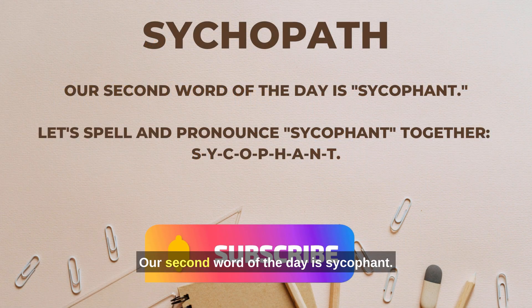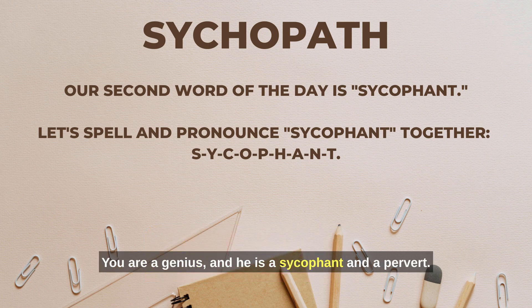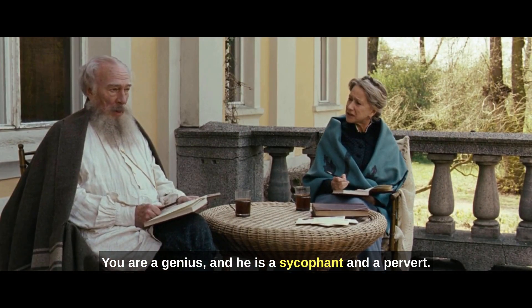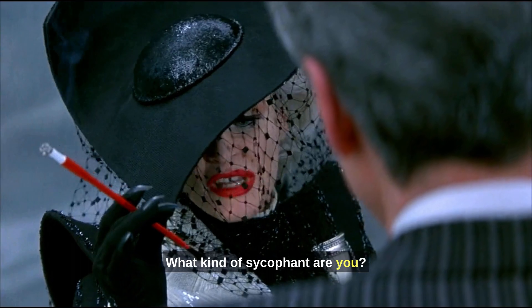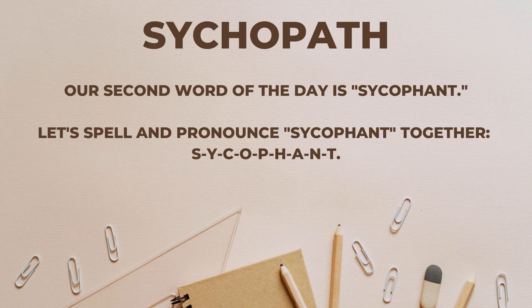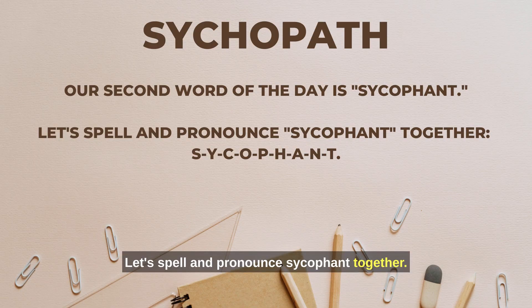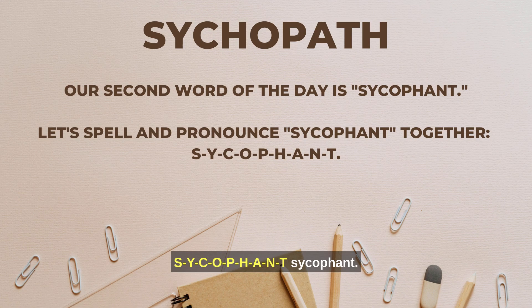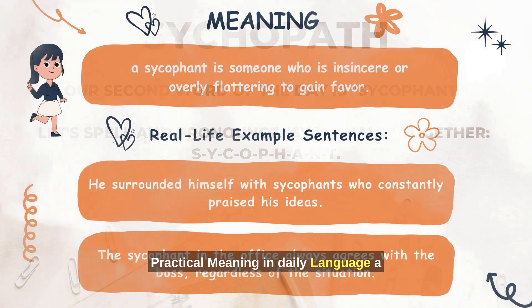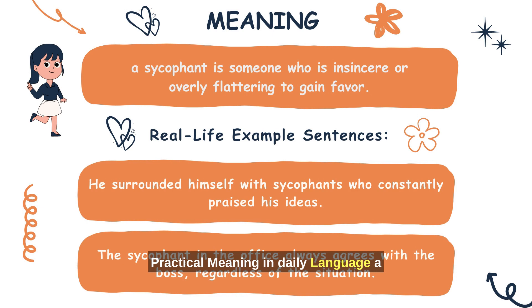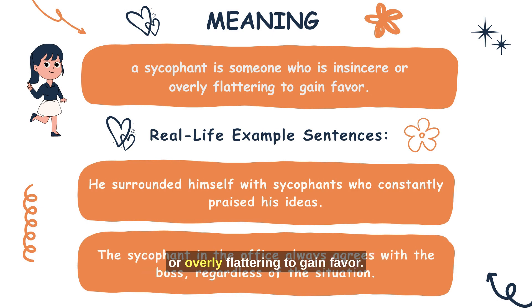Our second word of the day is sycophant. 'You are a genius and he is a sycophant and a pervert.' 'What kind of sycophant are you?' Let's spell and pronounce sycophant together: S-Y-C-O-P-H-A-N-T. Sycophant. In daily language, a sycophant is someone who is insincere or overly flattering to gain favor.